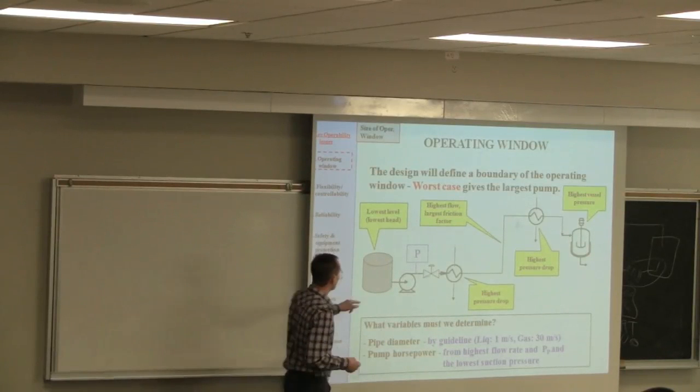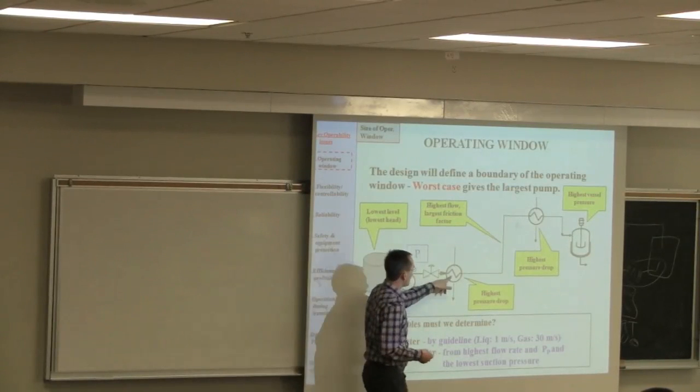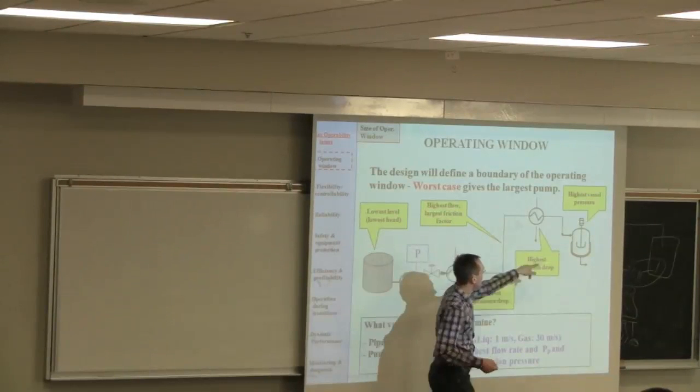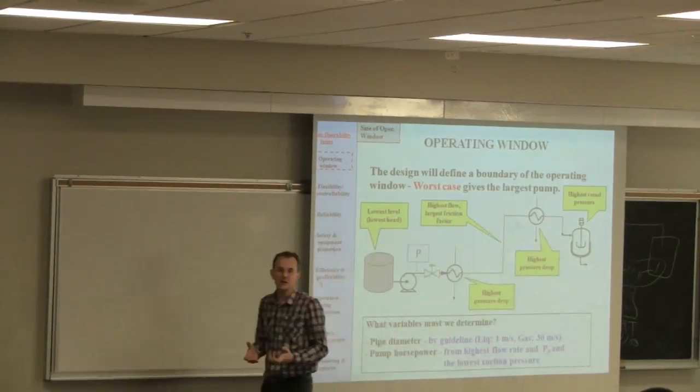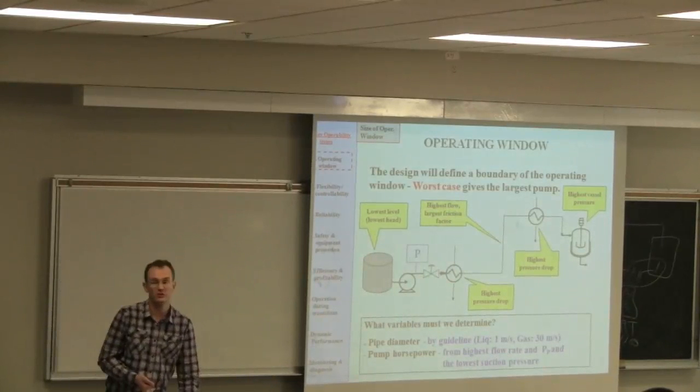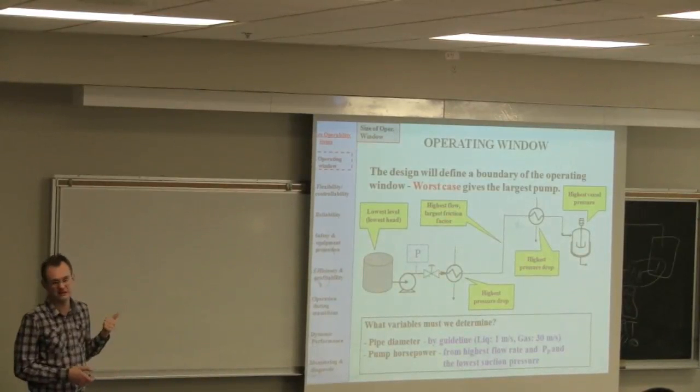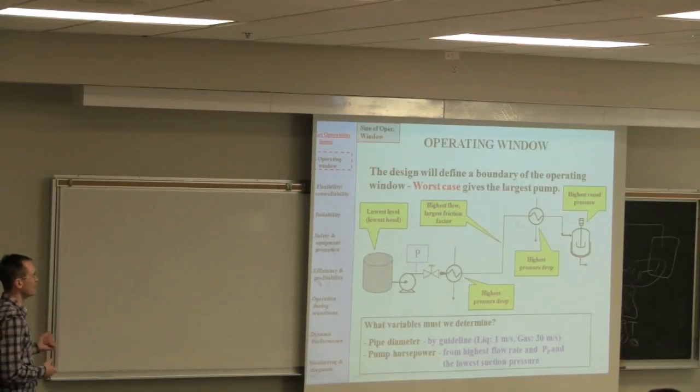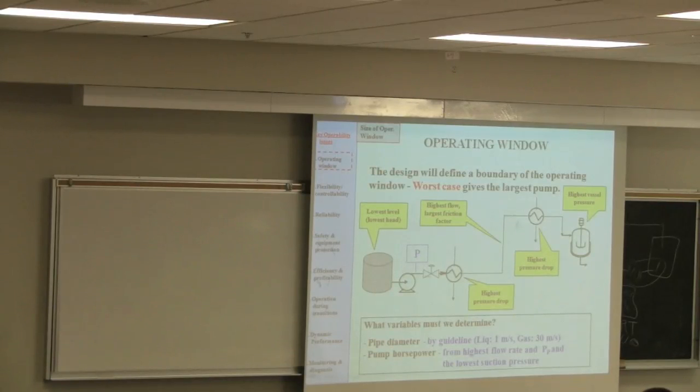So all of those give us an idea of the operating window of the process. We could design this pump so that it operates under very high tank level and low tank level, high pressure drops and low pressure drops through this piping, and high pressure and low pressure in that vessel. But it's clear that if we design it for the worst case, it's going to work for the other combinations as well. That's usually the approach we follow. So identify the variables that could change over the process. That goes back to the class about two, three weeks back, where we looked at different ways the process experiences disturbances.